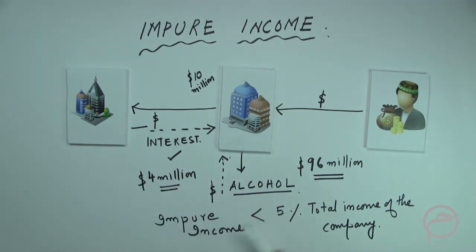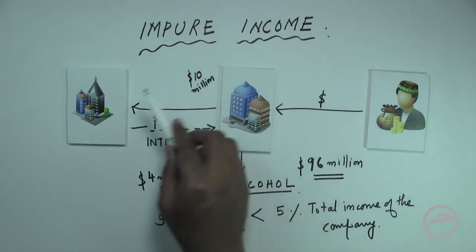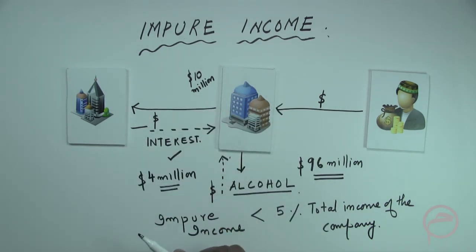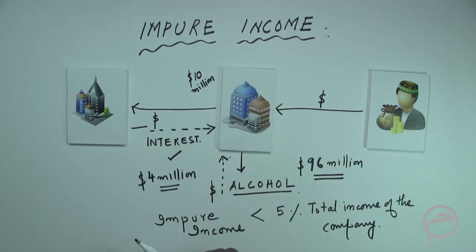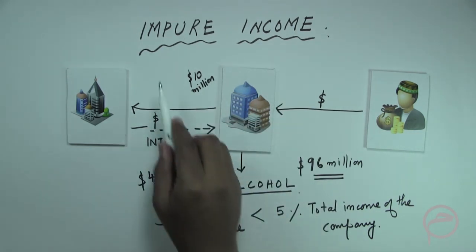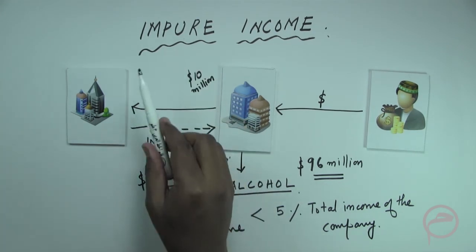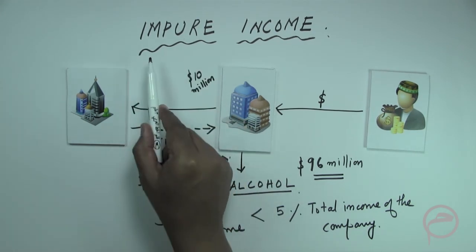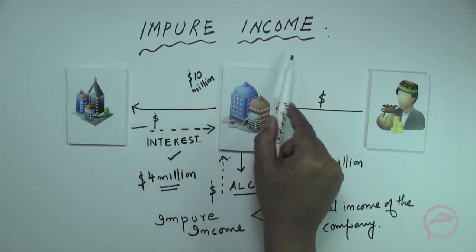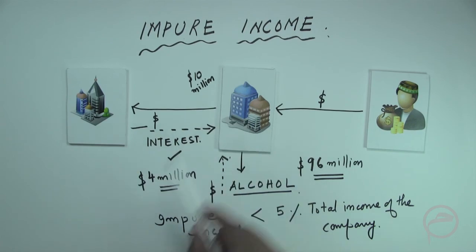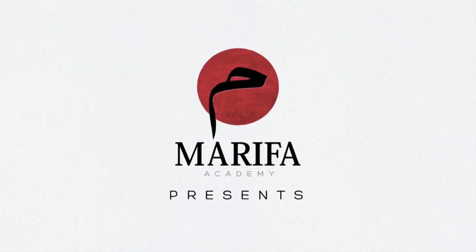So this is the screening mechanism with reference to financial screening, and under financial screening specifically with reference to impure income. To be continued.